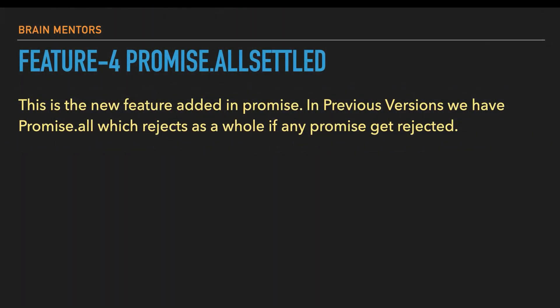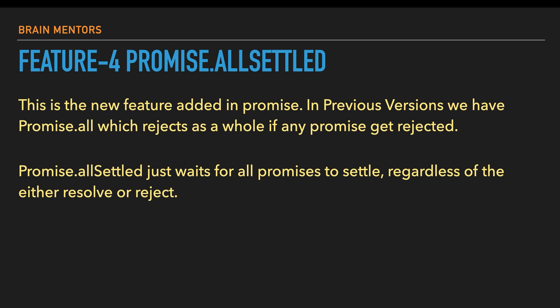Moving to feature number four: Promise.allSettled. This is a new feature added to promises. The previous Promise.all rejects entirely if any promise gets rejected — it only works when all promises are successful. Promise.allSettled, by contrast, waits for all promises to settle, whether resolved or rejected.